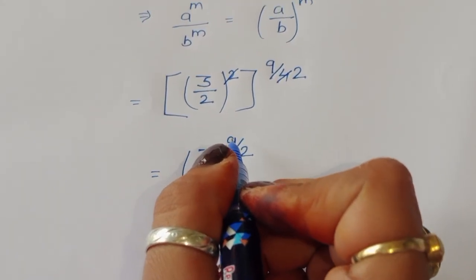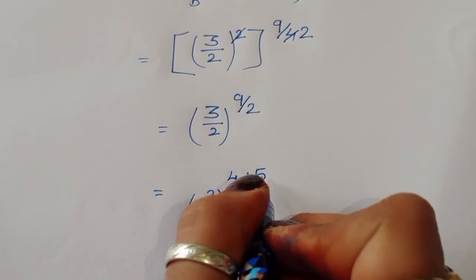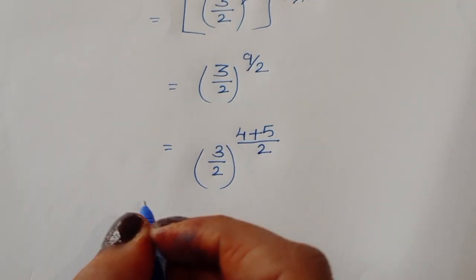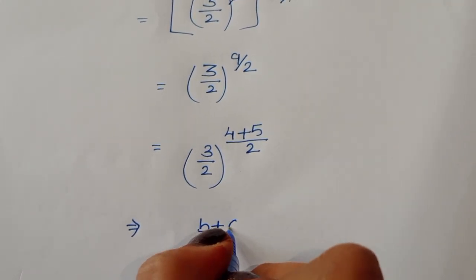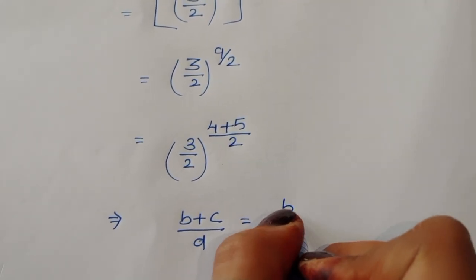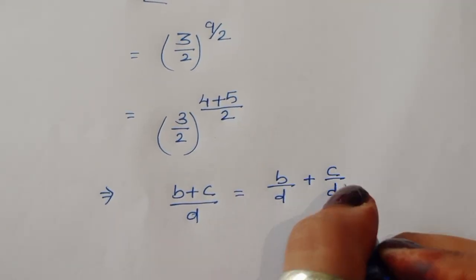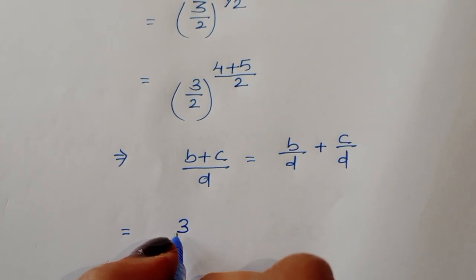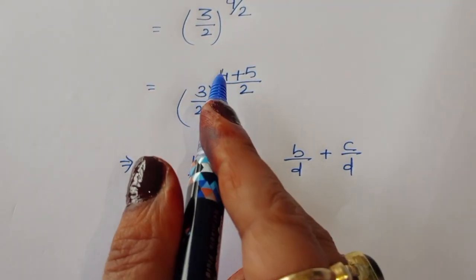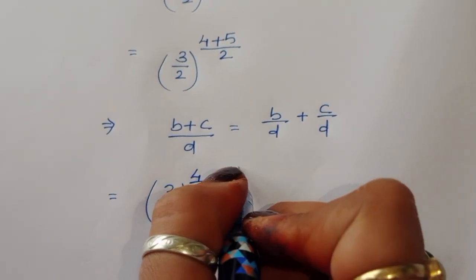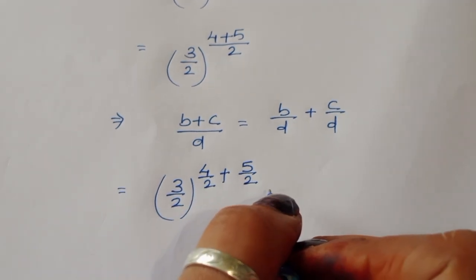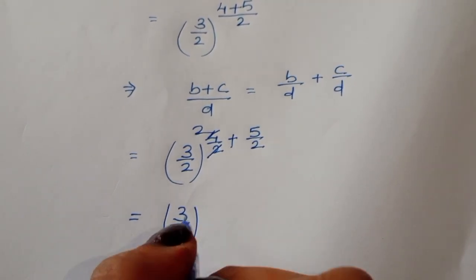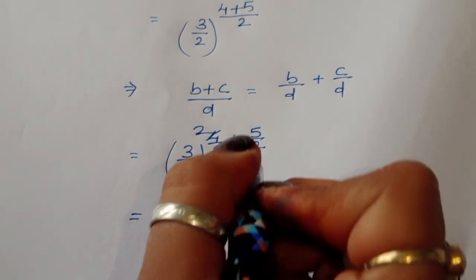Now this exponent 9 we can write as 4 plus 5, so 9/2 becomes (4 plus 5) divided by 2. We apply the formula: (b + c)/d = b/d + c/d. So the power becomes 4/2 plus 5/2, giving us (3/2) to the power (4/2 + 5/2). Simplifying 4/2, we get (3/2) to the power 2 plus 5/2.